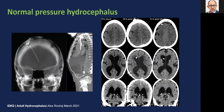A follow-up CT scan performed 24 hours after surgery did not show any relevant change compared to the pre-surgical scan. But six months after surgery, the CT scan showed a mild decrease in ventricular size, almost complete normalization of white matter changes — supporting that they correspond to interstitial edema — and an expansion of the upper convexity subarachnoid spaces, indicating normalization of the pressure gradient between the ventricular system and CSF spaces, which is the main objective of the surgical procedure.